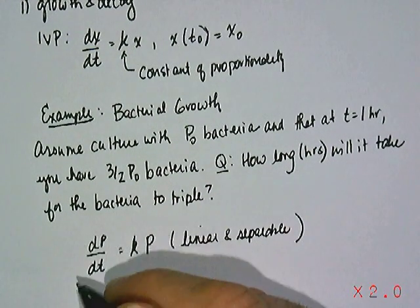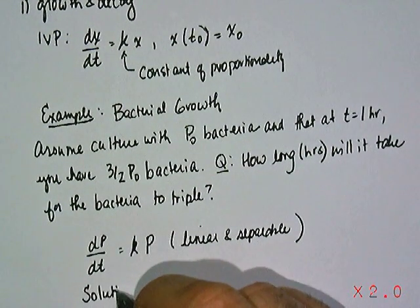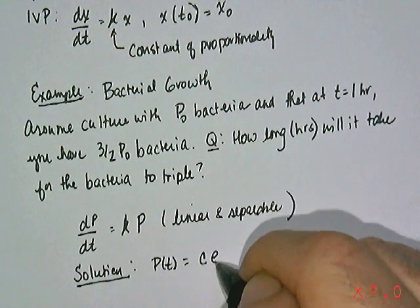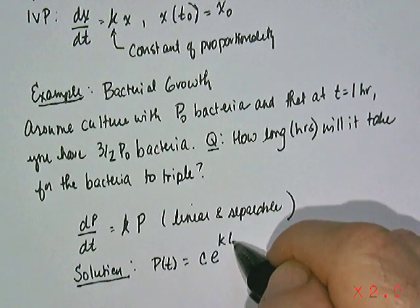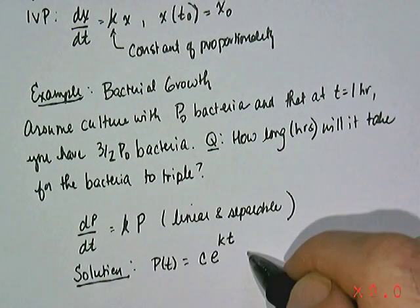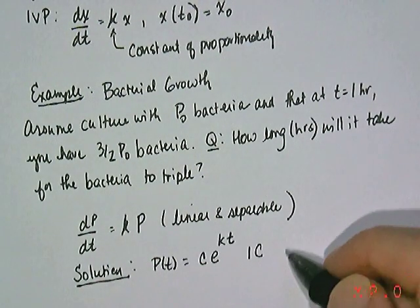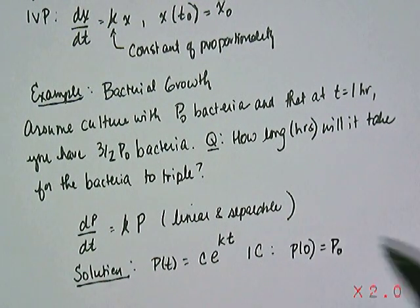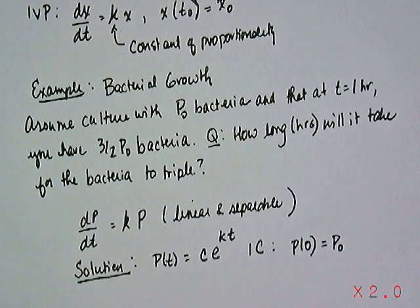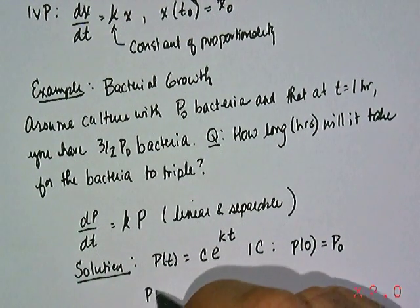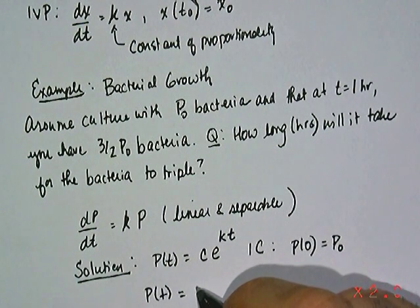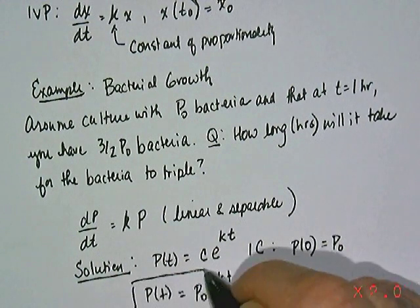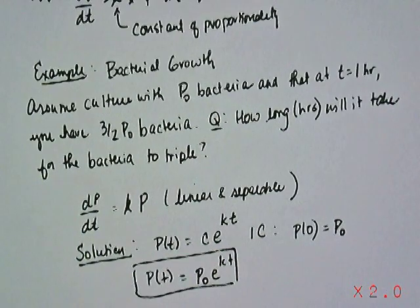And it would be very easy to show that the solution to that differential equation describing bacterial growth would be of the form the population at time T is some constant times E to that K times T. If you use your initial condition that we know that initially your population that you started with was some value P0, so P of zero equals this quantity P sub zero, then it's easy to show that the model for this particular bacteria is of the form P0 E to the Kt power.